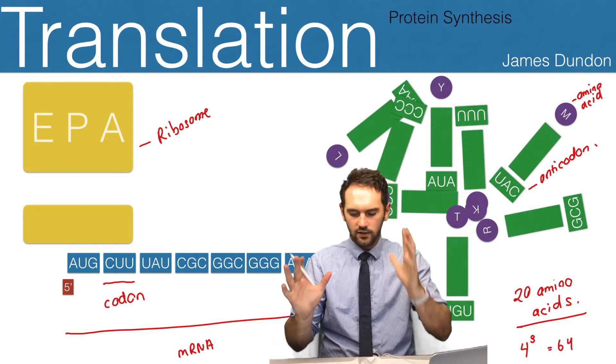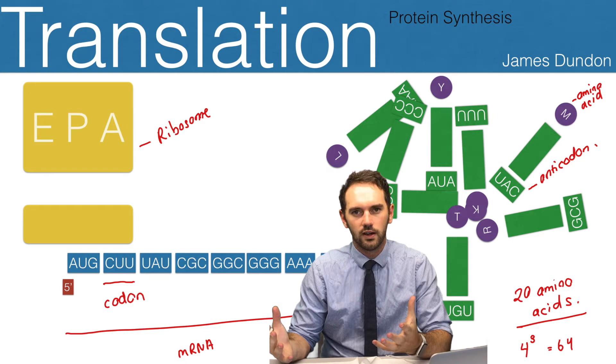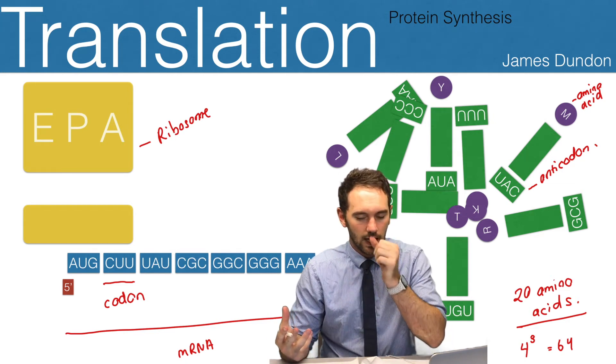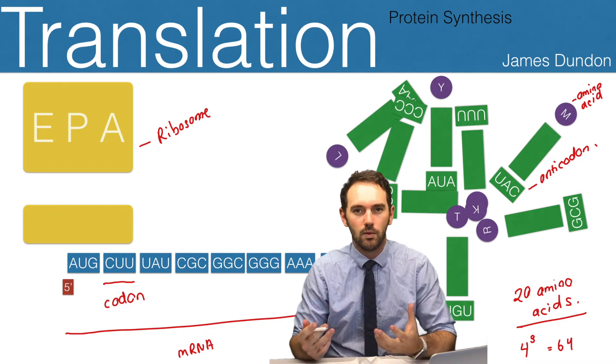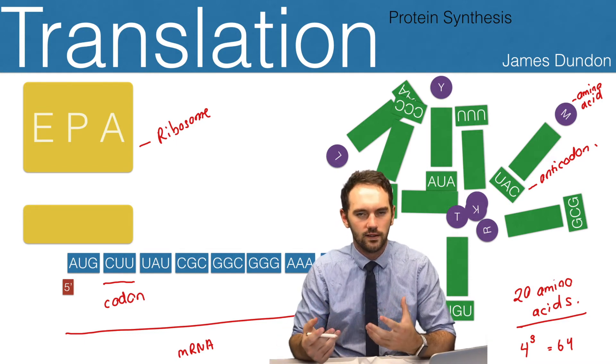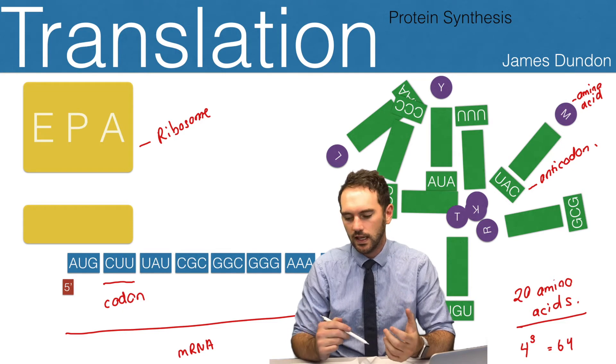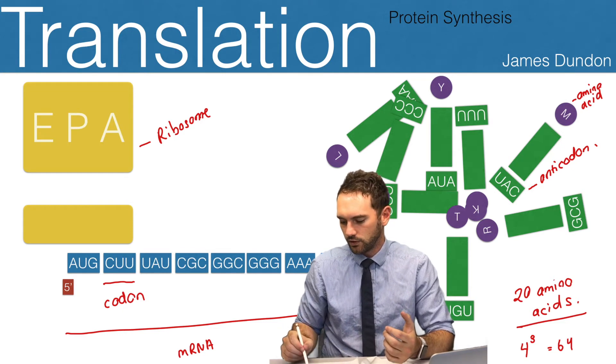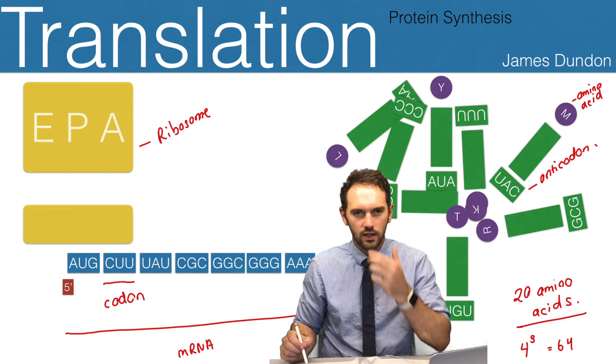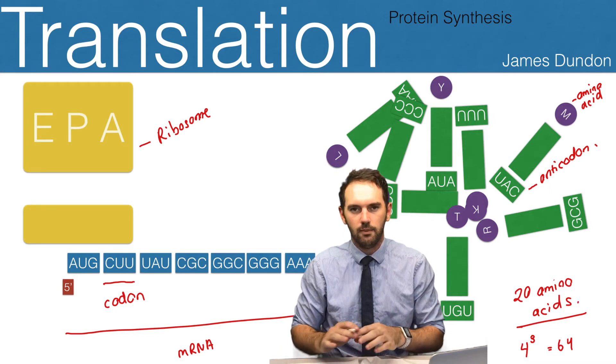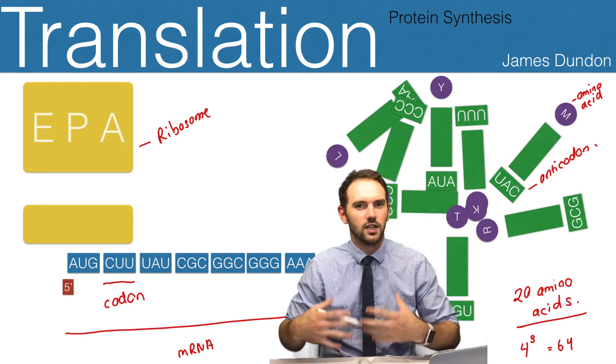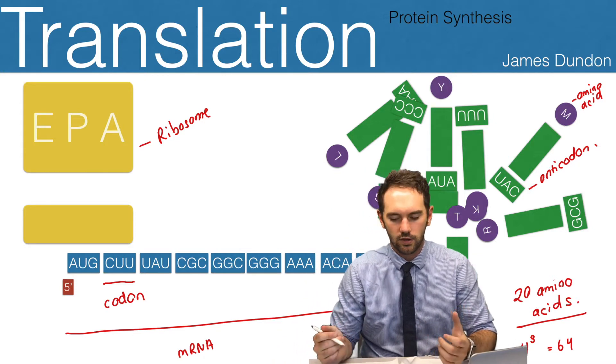You're thinking, hang on a sec. We've got 64 different transfer RNA molecules, but we've only got 20 different amino acids. That's because some of the transfer RNAs carry the same amino acid, but they always carry that amino acid still. Some of the codons actually code for no amino acid at all. They code for like a stop, to end the translation process.